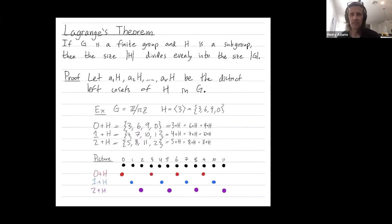But an example of this would be if G is Z mod 12Z, H is the subgroup generated by three. Then here we have three distinct cosets, right? So here in this picture, R would be equal to three.